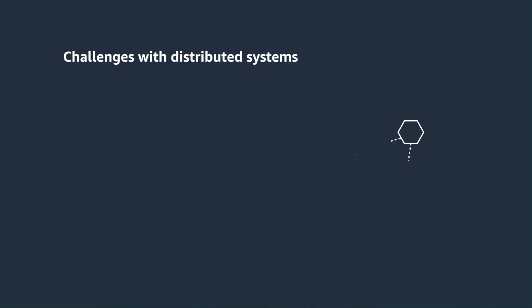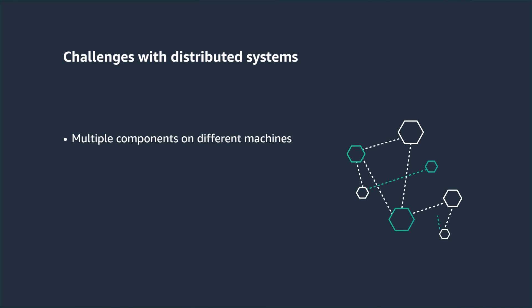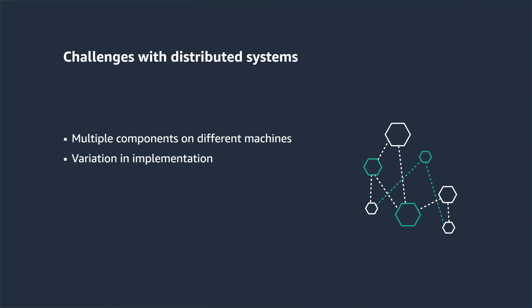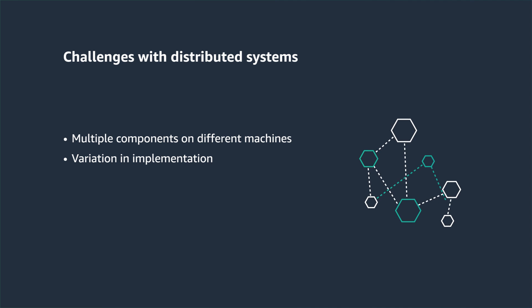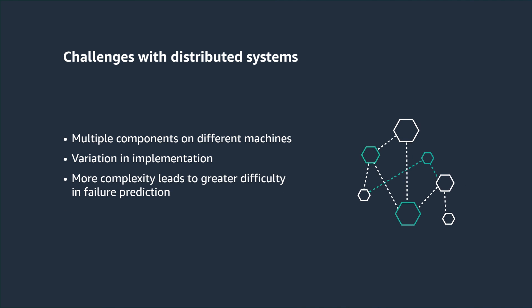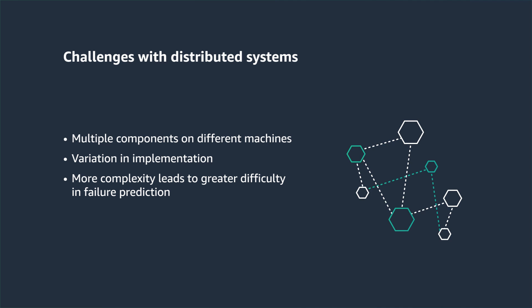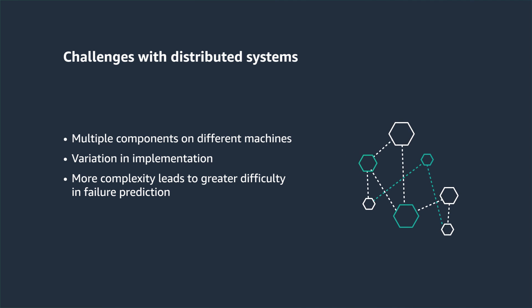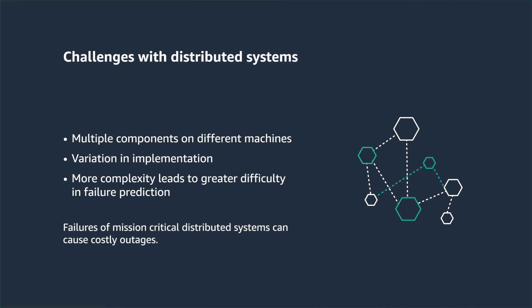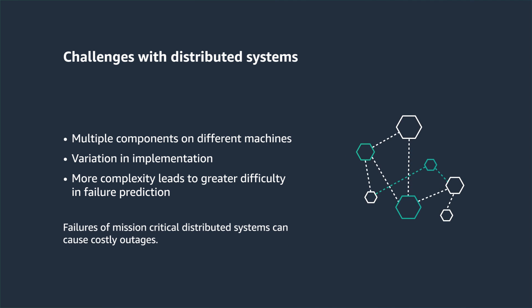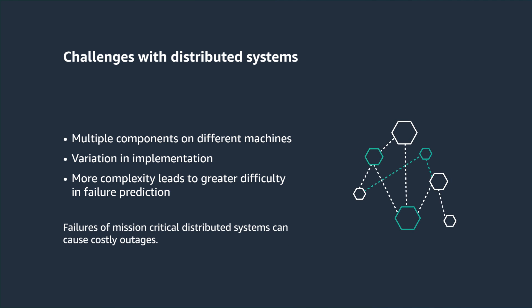Before we dive in, let's look at some of the challenges with distributed systems. Distributed systems have multiple components located on different systems and vary greatly in implementation. As distributed systems grow in complexity, so does the difficulty in predicting failures. Failures of mission-critical distributed applications can cause costly outages.